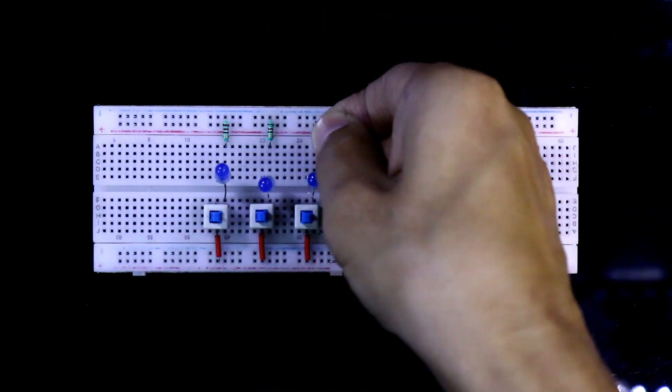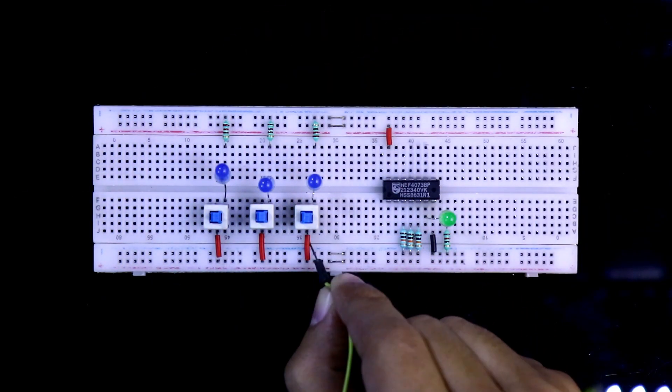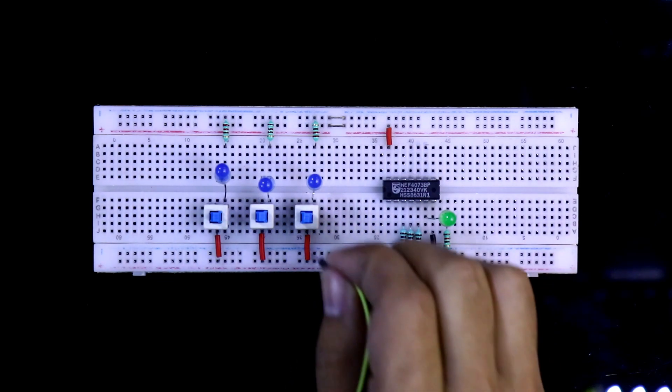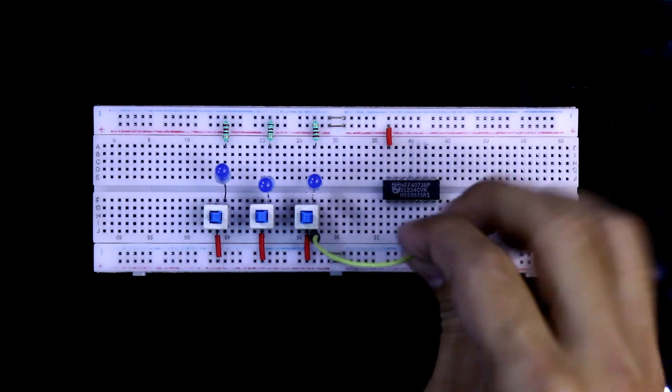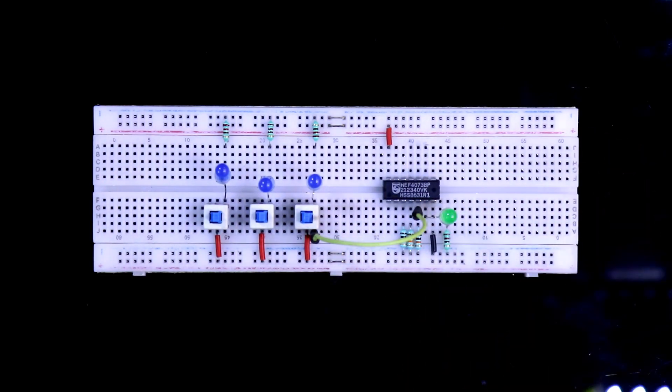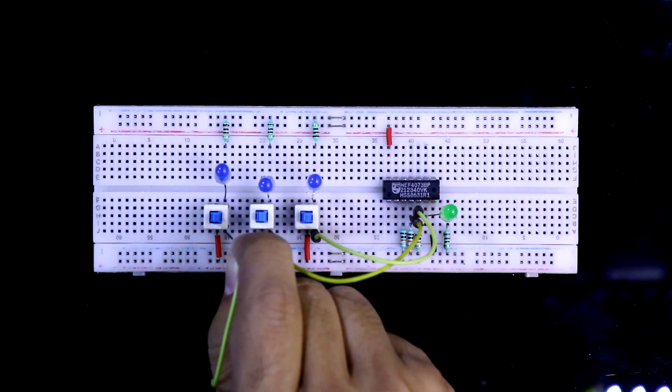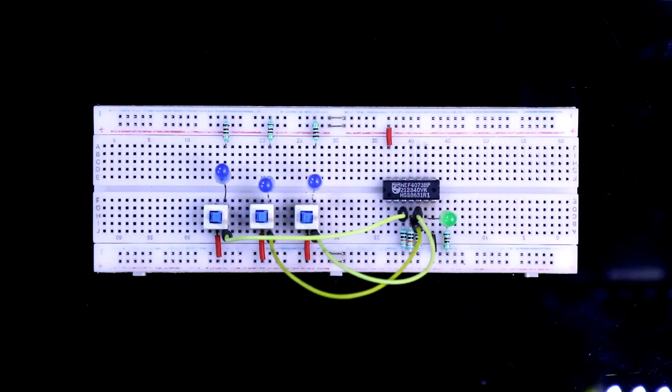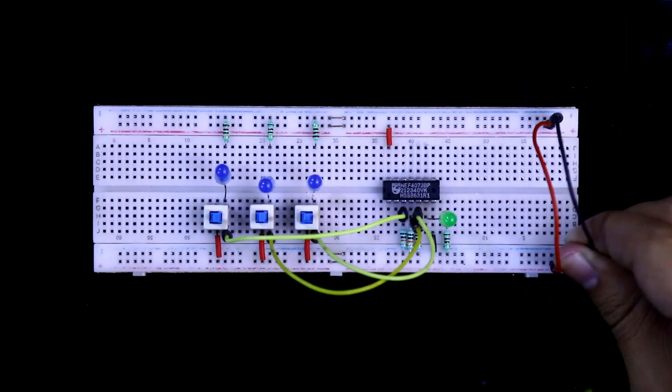With the input side, we have to connect the input LEDs and switches. These switches are connected to pin numbers 3, 4, and 5.